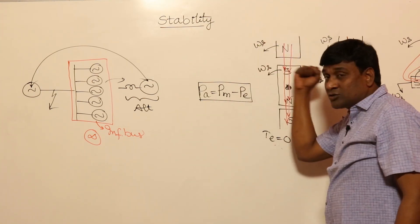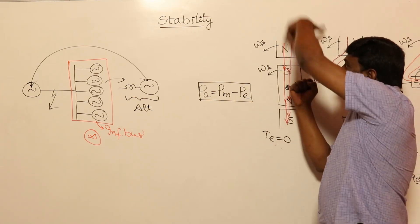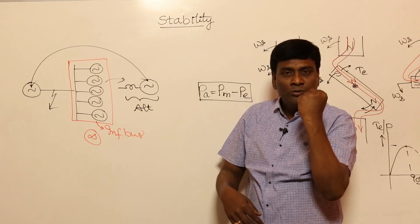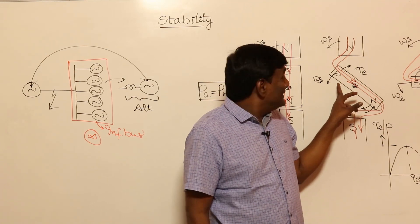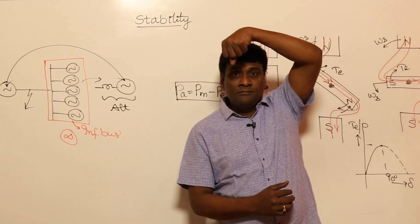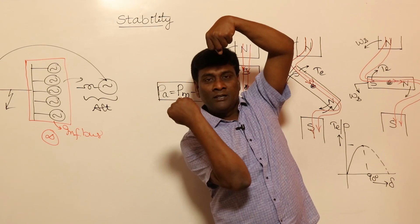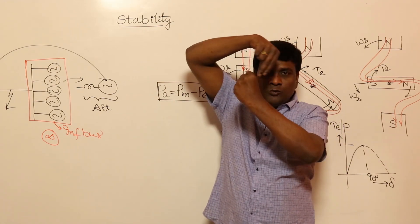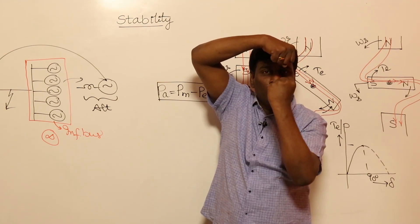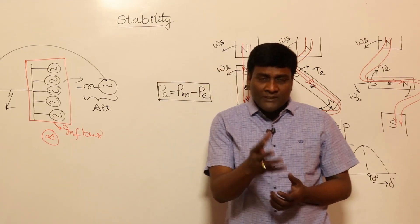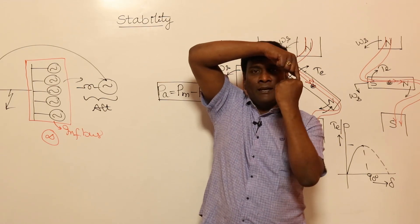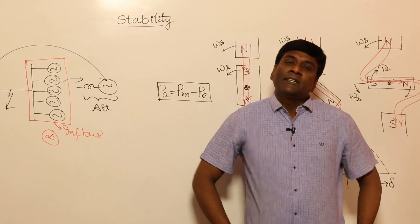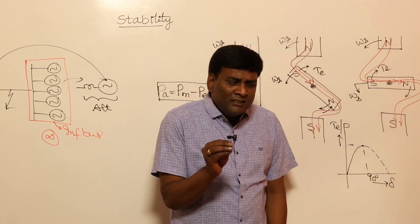Because of some disturbance, if the rotor starts swinging, the flux gets stretched and will keep on stretching, pulling it back to stable condition. At 90 degrees, if a small perturbation happens, synchronizing power coefficient is zero and it will go out of synchronization. At delta equal to zero, output power is zero but synchronizing power coefficient is maximum.